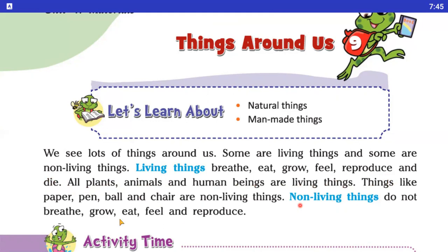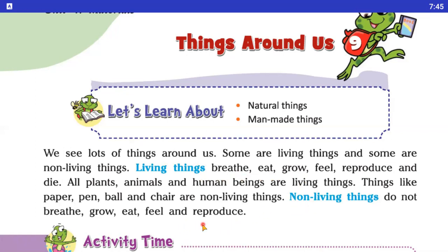And things like paper, pen, ball, and chair — these are non-living things. Ye non-living things ki examples hai. And non-living things do not breathe, grow, eat, feel, and reproduce. Jo living things hai, they can breathe, eat, grow, and feel. But non-living things do not breathe, grow, eat, feel, and reproduce. Got it?